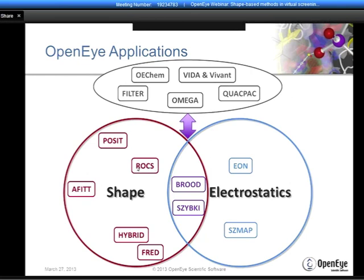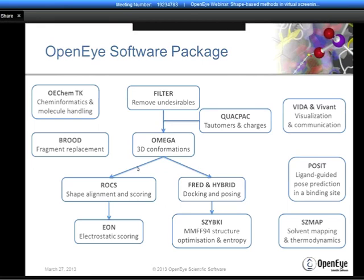When we put these tools into a workflow—where the output of one is the input for another—we see in the center a set of database preparation tools like Filter, QuackPack, and Omega. To the bottom left are ligand-centric techniques: EasyShape with ROCS and electrostatic tool EON. In the middle at the bottom are structure-centric tools like Thread and Hybrid. On the right are tools using shape or electrostatic methods in a protein-centric way. Our tool of choice today is ROCS—a tool for shape, alignment, and scoring.